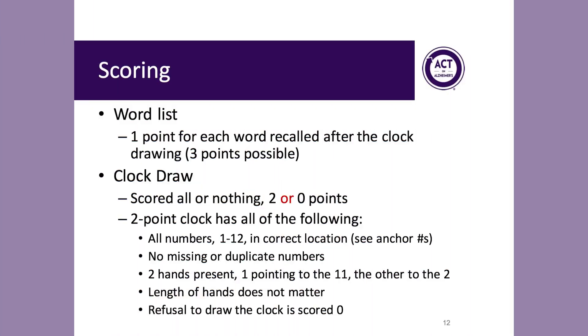To score the word list component of the Mini-Cog, each word successfully recalled verbatim after the clock drawing portion is scored one point for a total possible three points. The clock draw is scored all or nothing, that is, a full two points or no points. The clock scoring is weighted in this way because it has been shown to be an early and sensitive indicator of the types of cognitive decline that are common in the setting of dementing conditions like Alzheimer's disease.